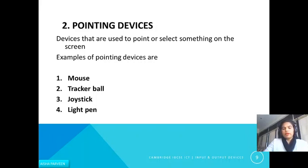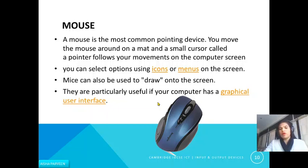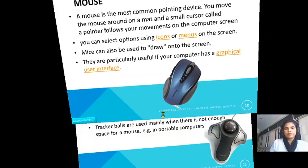The second device is pointing devices — devices used to point or select something on the screen. Examples include mouse, tracker ball, joystick, and light pen. The most common pointing device is the mouse. You move the mouse around a mat and a small cursor called a pointer follows your movement. You can select options using icons or menus, and it can be used to draw on the screen. A mouse is particularly useful when your computer has a graphical user interface.